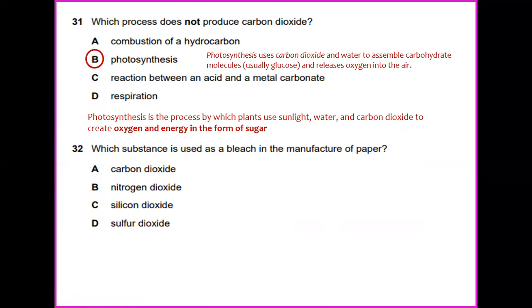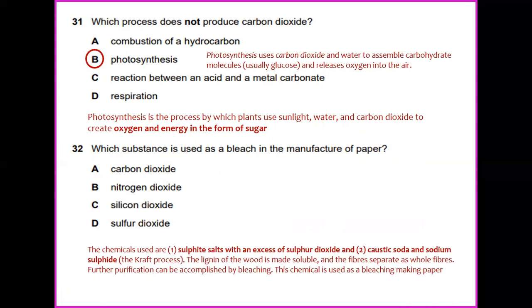Which substance is used as a bleach in the manufacture of paper? The chemical uses sulfate salt and with the presence of sulfur dioxide and caustic sodium and sodium sulfate. The lignin of the wood is made soluble and the fibers separate as whole fibers. Further purification can be accomplished by bleaching. And this chemical is used in making paper. So the answer will be sulfur dioxide.